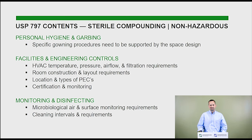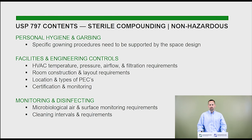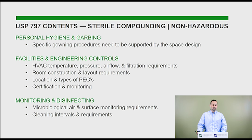Facilities and engineering controls affects us significantly, and there's a lot in the new changes we need to account for — HVAC, room construction, locations of primary engineering controls, biosafety cabinets, laminar flow workstations, and monitoring. We have to get these certified every six months. If one of these facilities misses their certification, it can have huge effects on a hospital. We also need to address monitoring and disinfecting. Everything in the clean rooms has to be disinfected at specific intervals — some things daily, some weekly, some monthly — and we need to design it to make that disinfecting process as easy as possible.